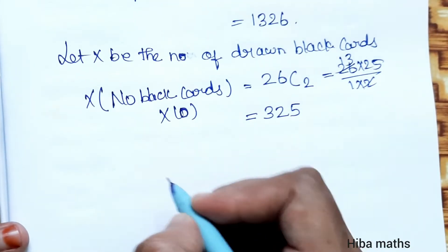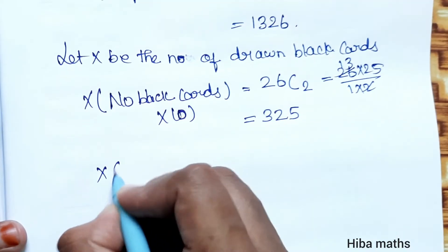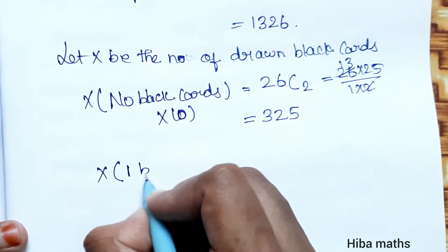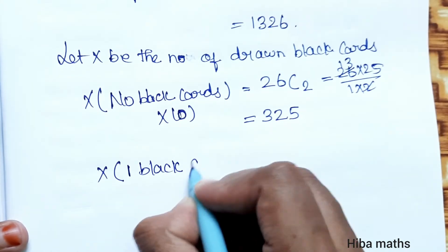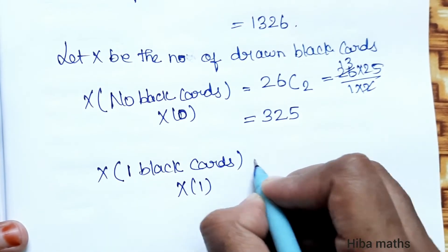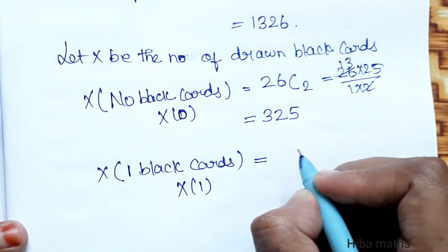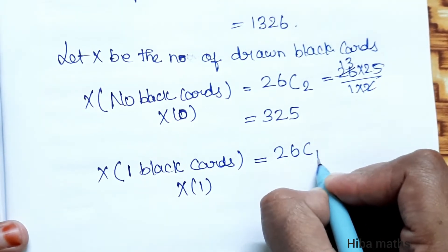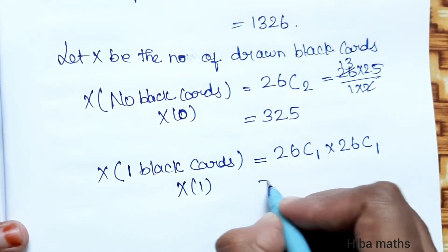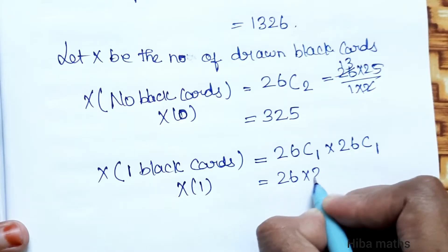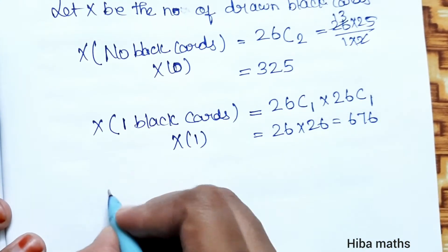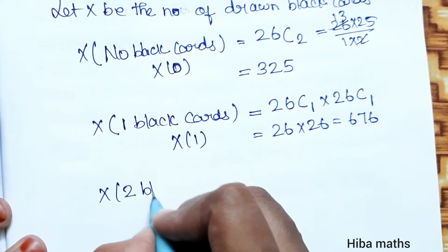For x = 1, one black card is drawn. That equals one card chosen from 26 black cards and one card from 26 red cards: 26 into 26 = 676.